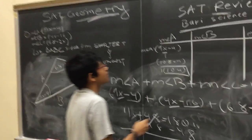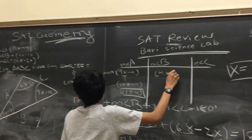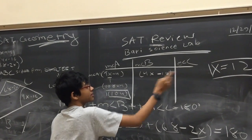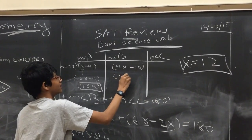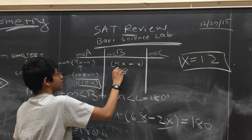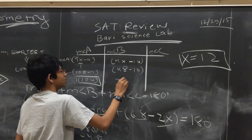We get the measure of angle B to be 4x minus 16. Substitute 12 into that. We get 48 minus 16, giving us 32.